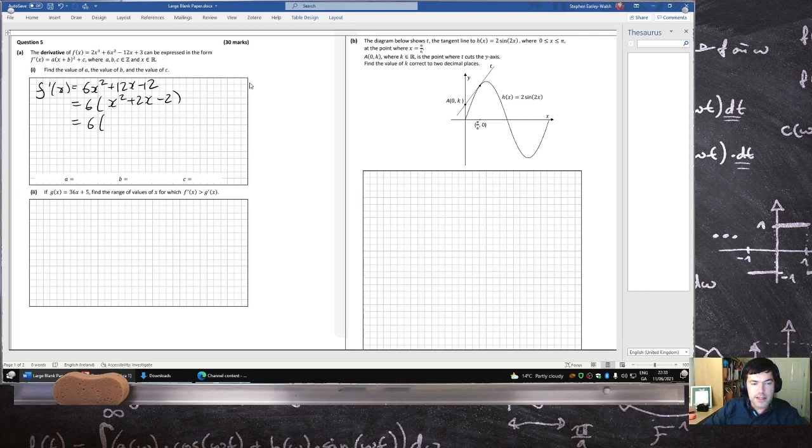That's 6 times (x plus 1) squared, and then minus 3, which would be 6 times (x plus 1) squared minus 18. So 6, 1, and minus 18.